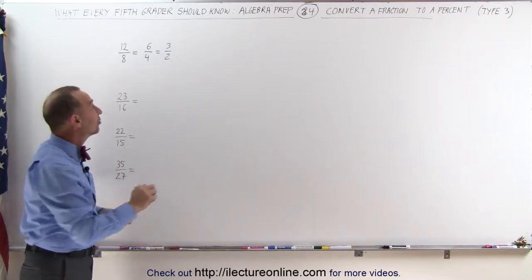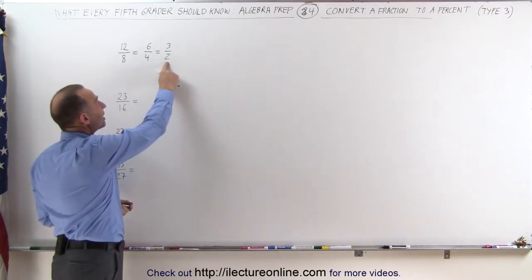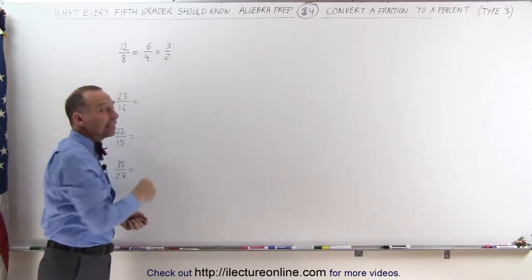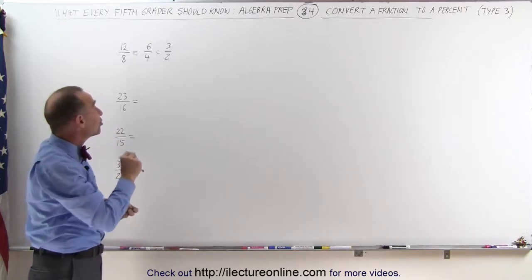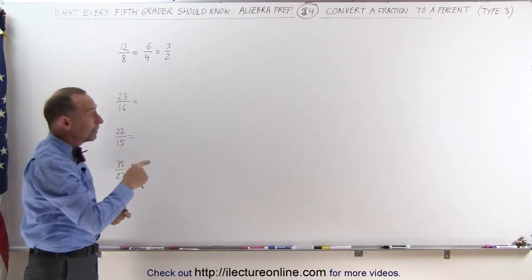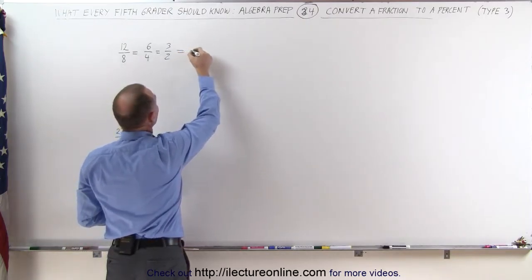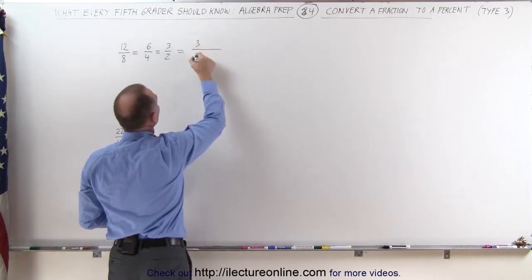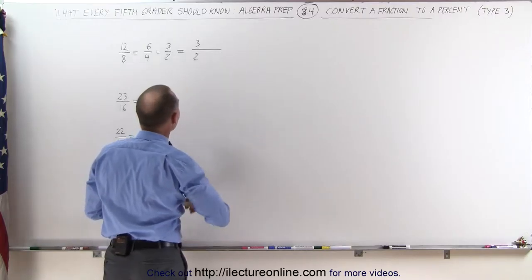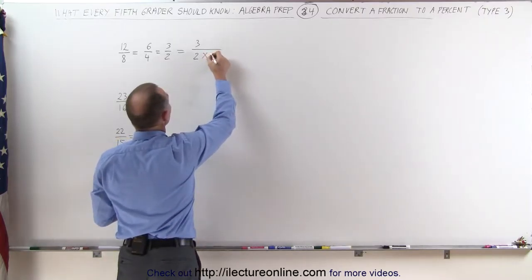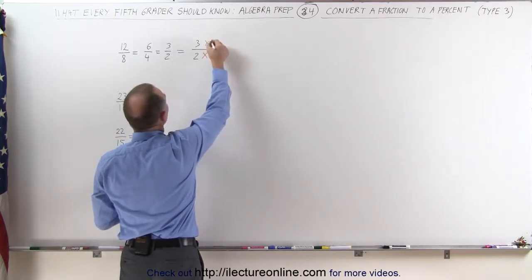The next thing we do is take a look at the denominator and see if we can fit the denominator evenly into 100. In other words, can we change the denominator to 100? And the answer is yes, because 2 times 50 is 100. This could then be written as 3 divided by 2. I'm going to multiply the denominator times 50 and multiply the numerator times 50.